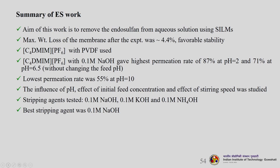In summary: the aim of this work was to remove endosulfan from aqueous solution using a supported ionic liquid membrane. Maximum weight loss of the membrane after experiment was 4.4%, indicating favorable stability. C4-DMIM PF6 with PVDF (polyvinylidene fluoride) porous support was used. This ionic liquid with 0.1 molar sodium hydroxide gave the highest permeation — 87% at pH 2 and 71% at pH 6.5 (without pH adjustment). Lowest permeation was 55% at pH 10. The influence of pH, initial feed concentration, and stirring speed was studied. Best stripping agent was 0.1 molar sodium hydroxide.